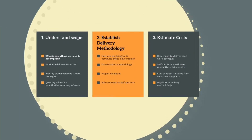Let's now look at direct cost estimating in a little bit more detail. Direct cost estimating can be broken down into three simple fundamental steps. Number one: understand the scope. Number two: establish the delivery methodology. And number three: estimate the costs.